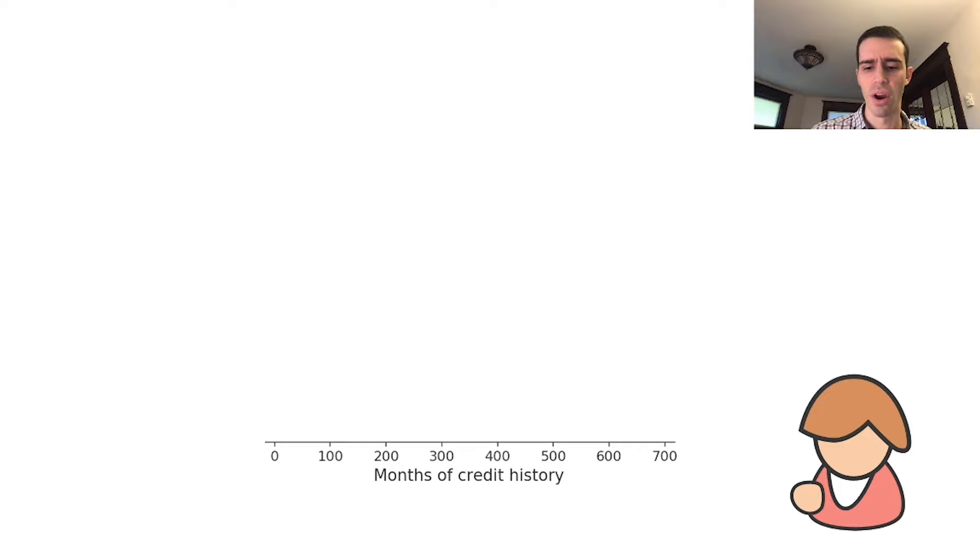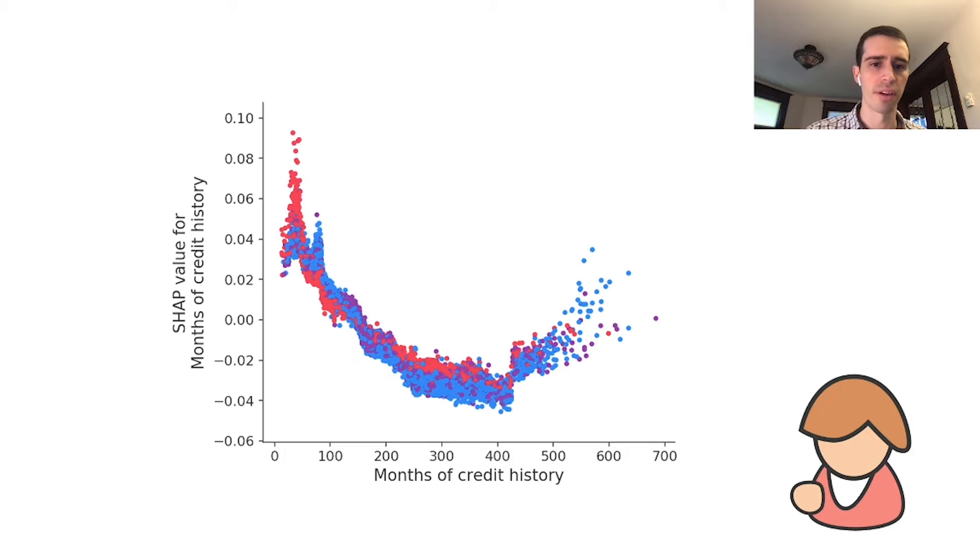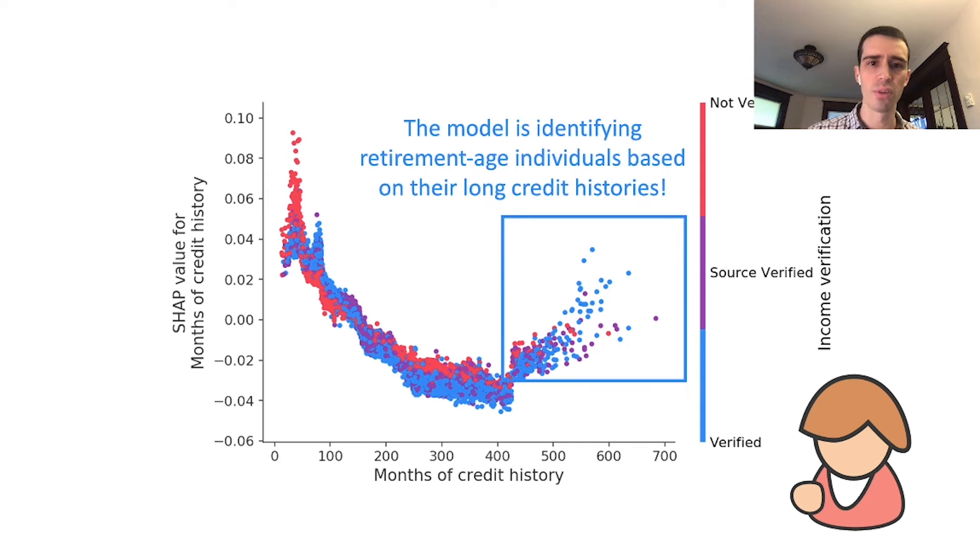Let's examine credit history. Remember, it was surprising that credit history hurt John's score. If we plot credit history versus SHAP value, we get a dot for every person with some vertical dispersion from interaction effects. John is in the tail with really long credit history. It doesn't take long to realize debugging was super important—this model identified retirement-age individuals based on their long credit histories and increased their risk of default. This is a big problem because age is a protected class. The model used credit history as a proxy for age. It's really important to explain and debug your models.